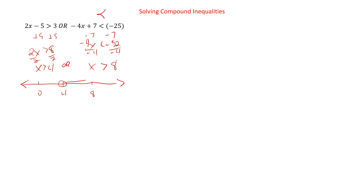So we have this one going that way and this one going that way. But with ORs, it has to hit at least one of them. So as long as it's bigger than four, it'll work — because everything bigger than eight is also bigger than four. And this is what we saw in that very first question too. This is basically just x is greater than four.